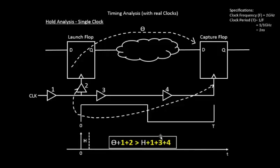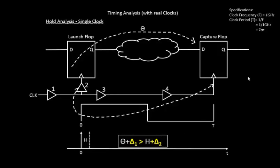So what we'll do next is this: 1 plus 2 we'll be calling it as delta 1, which is the launch clock network delay, and 1 plus 3 plus 4 we'll be calling as delta 2, which is the capture clock network delay.